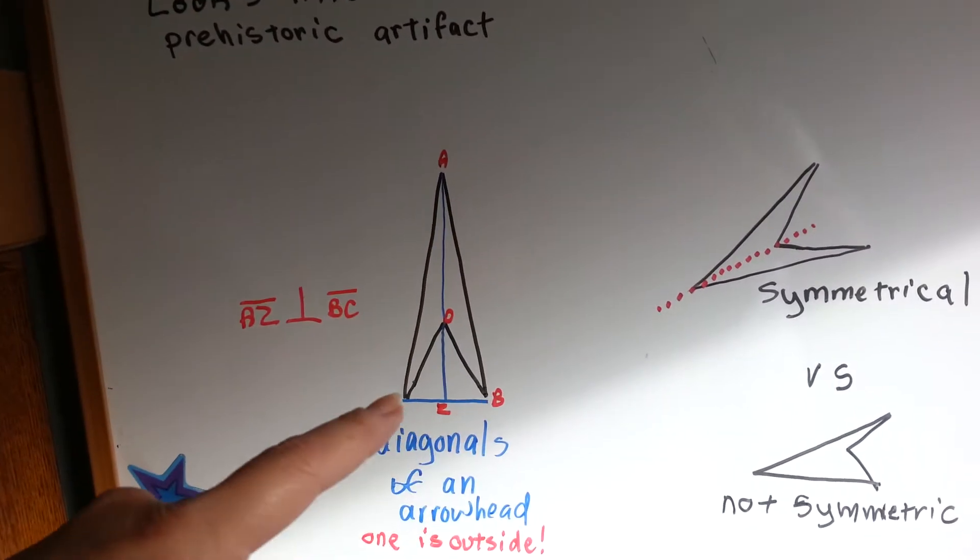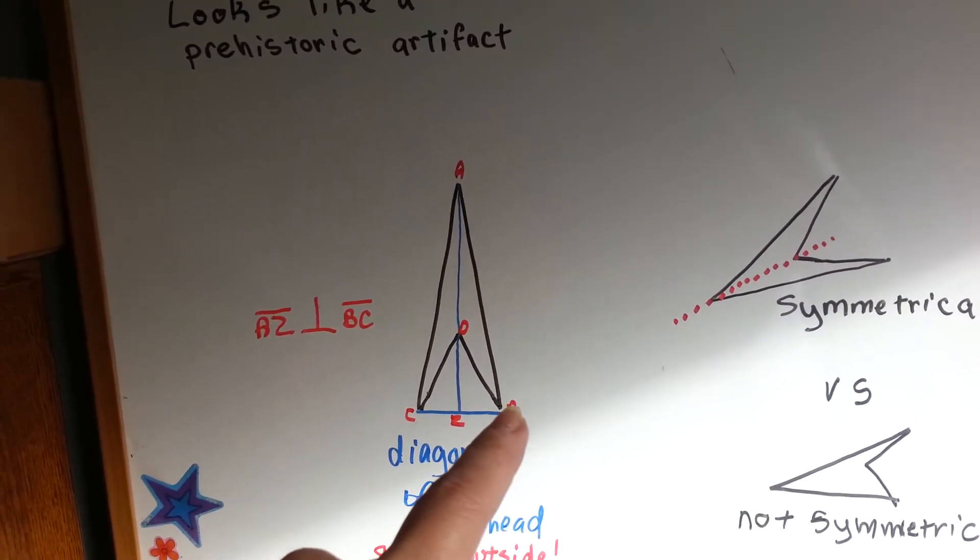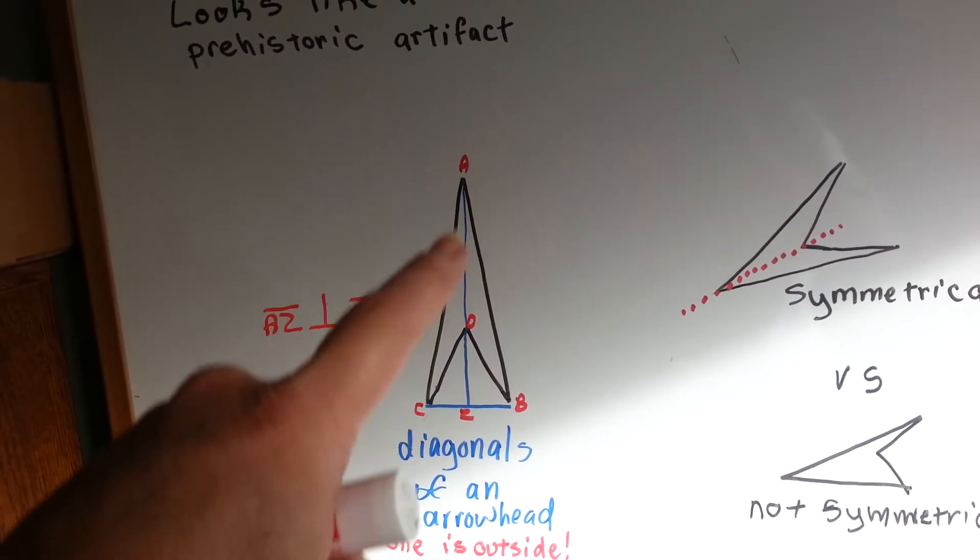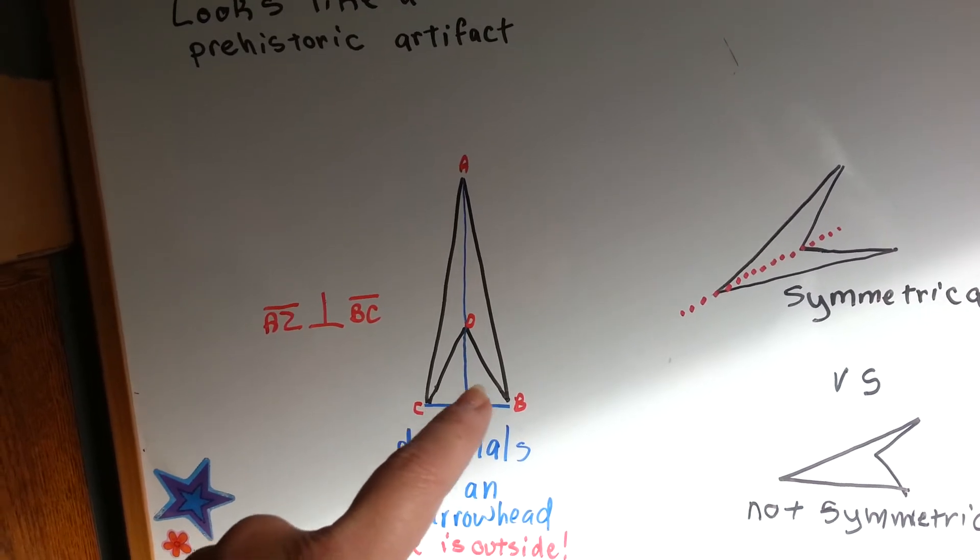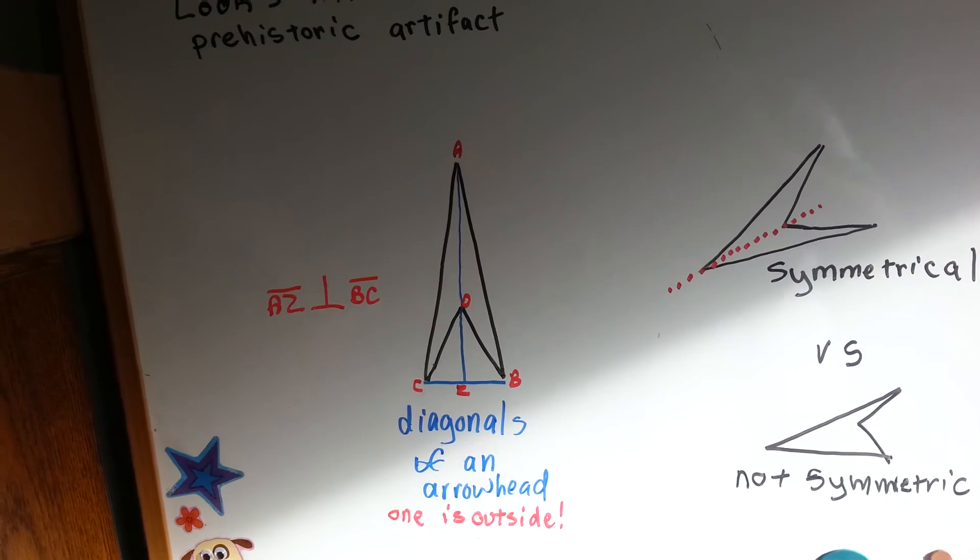These are the diagonals of an arrowhead. This diagonal line to connect this vertice to this vertice has to be outside of the arrowhead in order to be drawn. See? And then it makes 90 degrees right there. CB is outside of the figure.